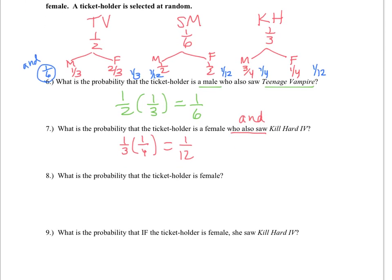Question eight: what is the probability that the ticket holder is female? There are multiple ways a female can go to the movies. Circling them in green: female and Teen Vampire, female and Strip Mall Dog Rangers, and female and Killhard — three different paths that result in a female going to the movies. Adding all these outcomes: one-third plus one-twelfth plus one-twelfth gives six-twelfths, or one-half.